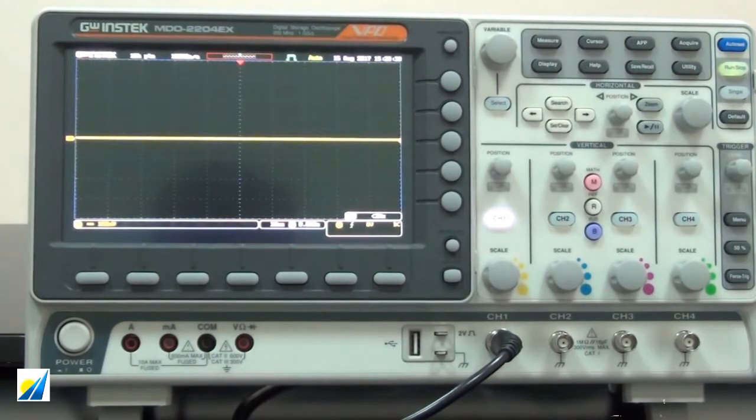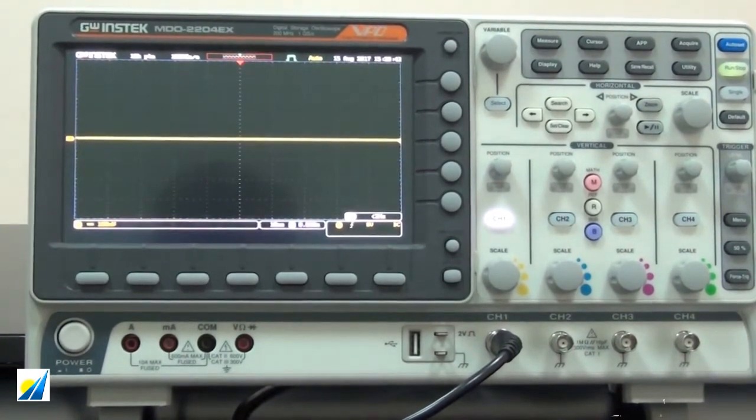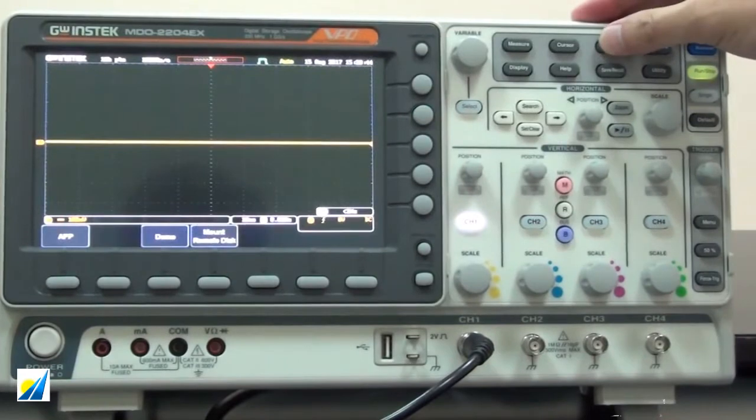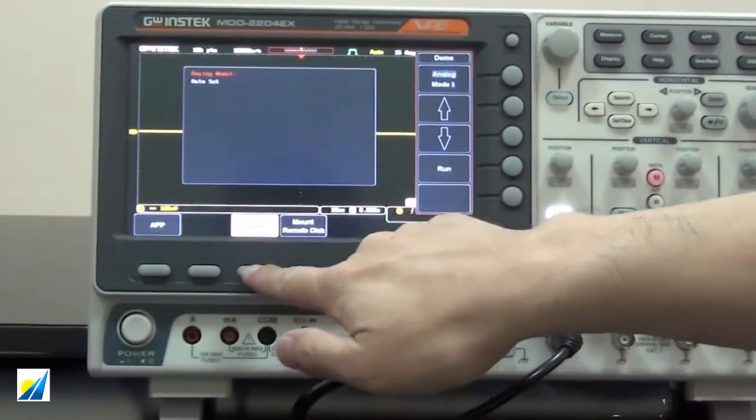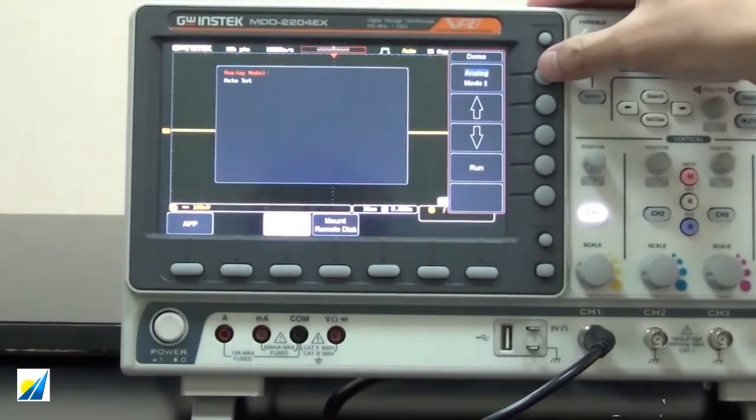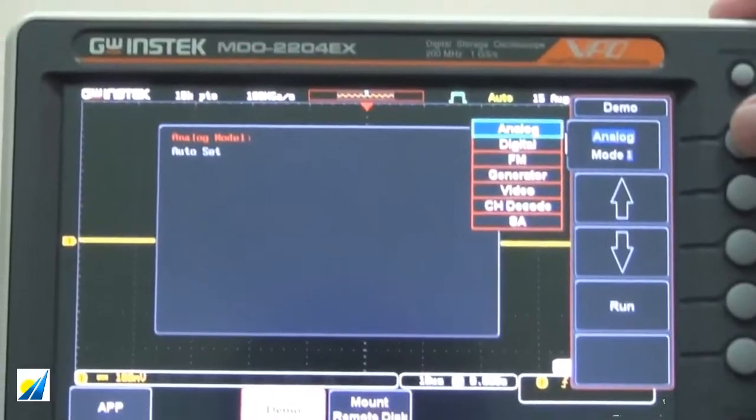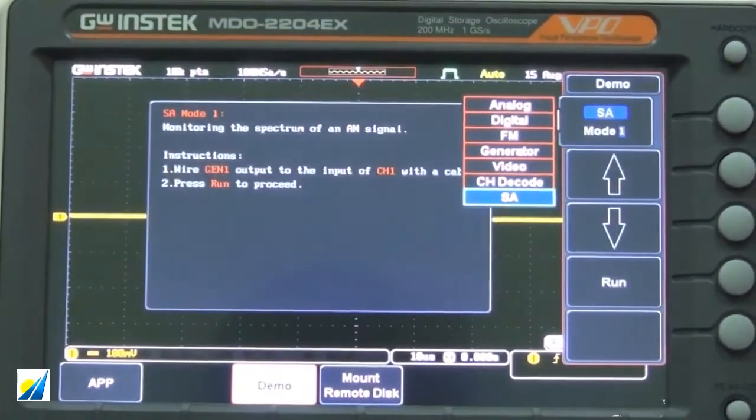To select SA mode 1 to 4, press Add, and Demo, and select SA.